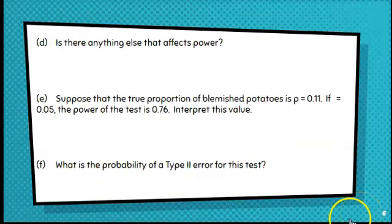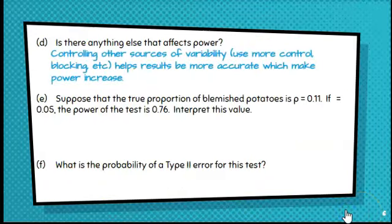Is there anything else that affects power? Well, controlling other sources of variability, like using controlling or blocking, helps those results be more accurate, which then in turn increases our power. So the way things are sampled or the way the experiment is done can increase your power.